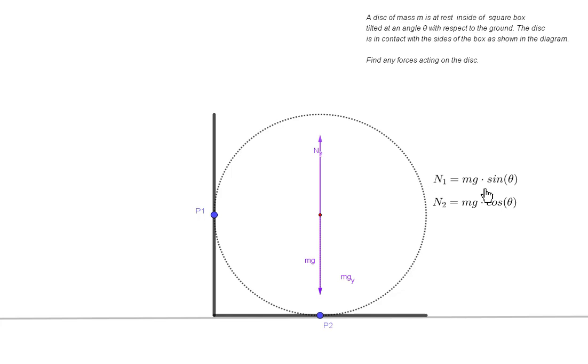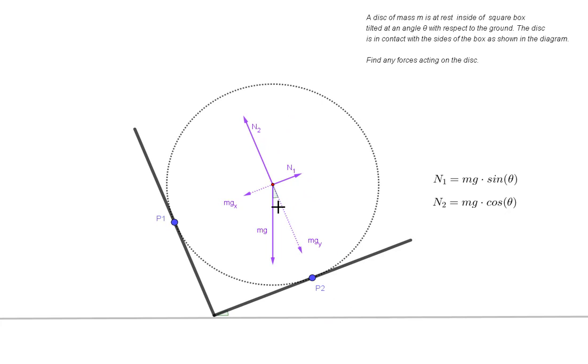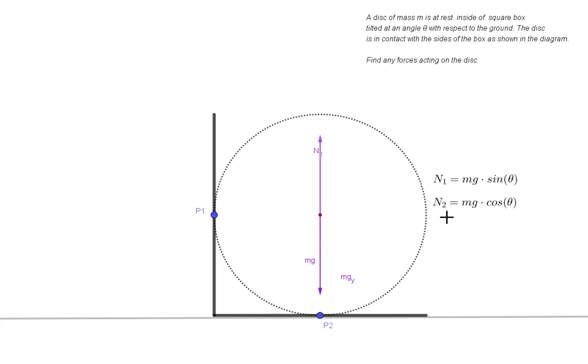So again, if you started off here and you weren't sure what angle this should be, then you can just first look at the extreme cases, and that should tell you that this angle should be equal to mg when cosine theta is equal to zero.